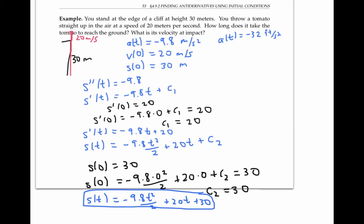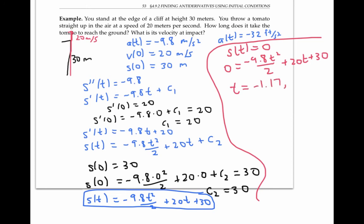Now I want to find out how long it takes the tomato to hit the ground. So setting zero equal to my expression for s of t, I can use the quadratic formula to solve for t, and I get t equals approximately negative 1.17 or 5.25. The negative time doesn't make sense for the problem, so I'm left with the time of impact of 5.25 seconds.